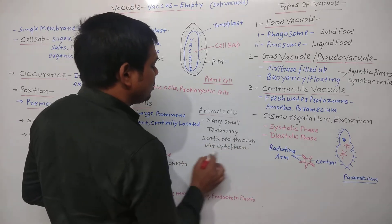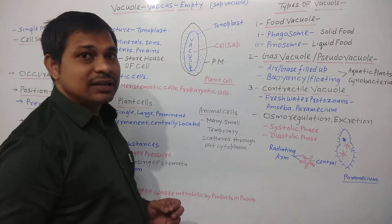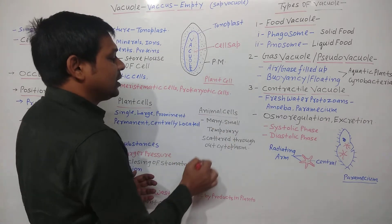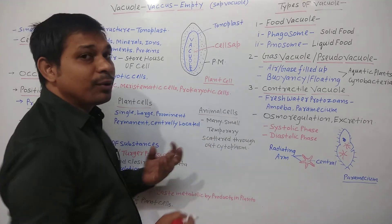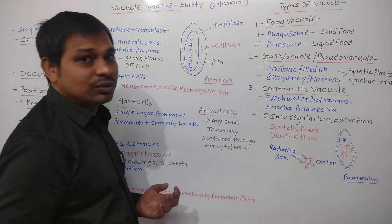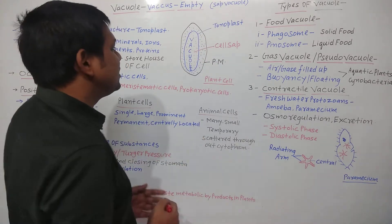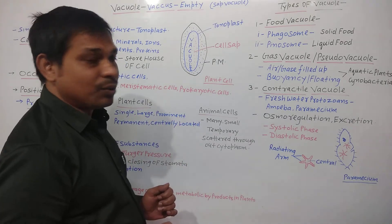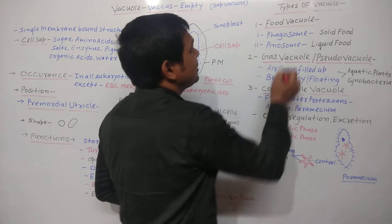In the case of animal cells, vacuoles are many, they are small in size, they are temporary, and they are scattered throughout the cytoplasm of the cell. This is the key difference between plant and animal cell vacuoles.